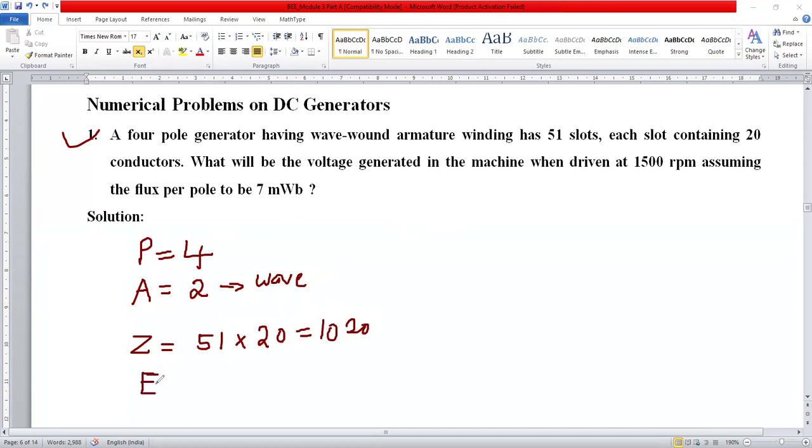What will be the voltage generated in the machine when driven at 1500 rpm? You are rotating the armature at a speed of 1500 rpm. Note that speed of rotation produces dynamically induced EMF. The flux per pole is given as 7 milliweber, which equals 7 times 10 to the power minus 3 weber.